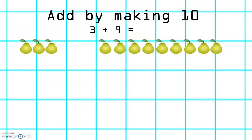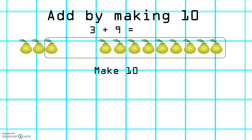Let's try this one. 3 add 9. First of all, we're going to make 10. 9 plus 1 equals 10, and 10 plus 2 equals 12. So 3 plus 9 equals 12.